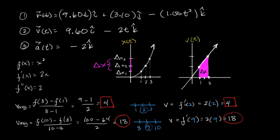Now take the derivative — the velocity function — and evaluate at t = 2, which is right between 1 and 3. That also gives 4. And if you pick 10 seconds and 8 seconds: 10² = 100, 8² = 64, divided by (10 − 8) = 2, gives 18. Evaluate the derivative at 9 (the midpoint) and you also get 18. This is the relationship between integral and differential calculus.